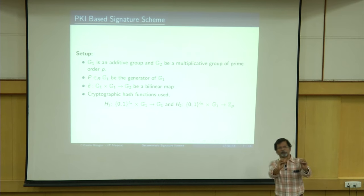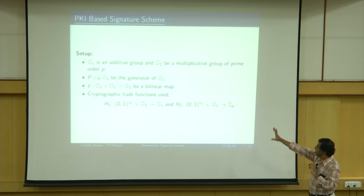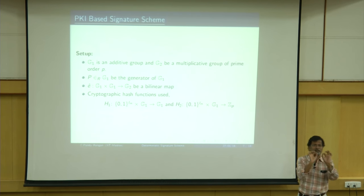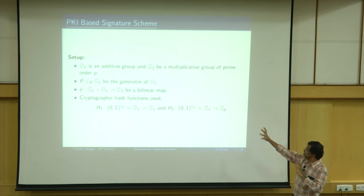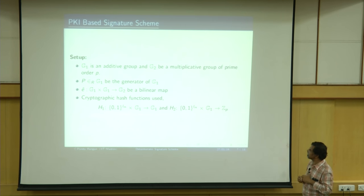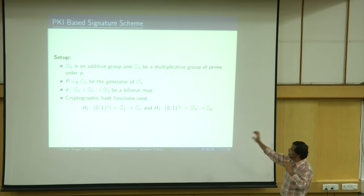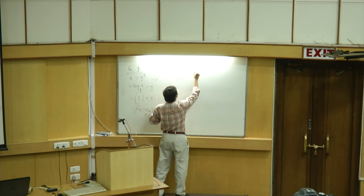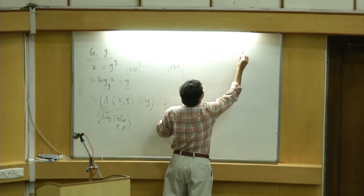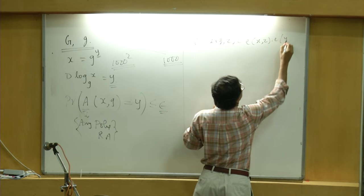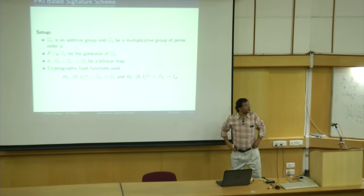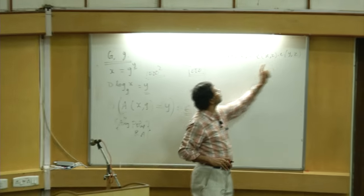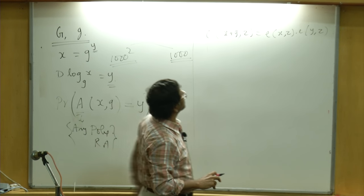Let me give the description of the system — the mathematical tools we are using. Our protocol is extremely simple: it has only four steps. It uses two ingredients: bilinear maps and cryptographic hash functions. We have groups G1 and G2, and a bilinear map e from G1×G1 to G2. The bilinear map has the property: e(X+Y, Z) = e(X,Z)·e(Y,Z), where G1 is an additive group and G2 is a multiplicative group.